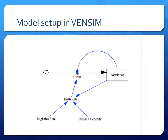Now let's look at how this model with the logistic equation looks in Vensim. We still have our population stock fed by births. These births depend on the birth rate, which in turn depends on three things: the logistics rate k, the carrying capacity value, and population itself. Population also enters the calculation of births because the number of births per year is the product of the birth rate and population — that's why there's a feedback loop between population and births.